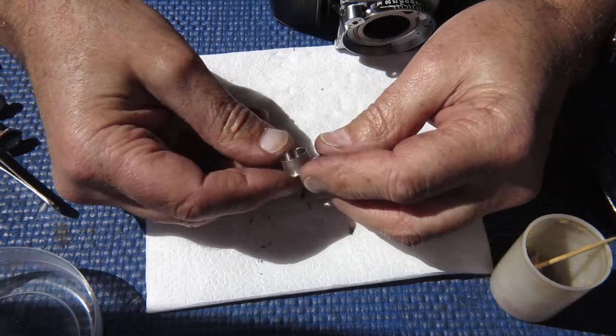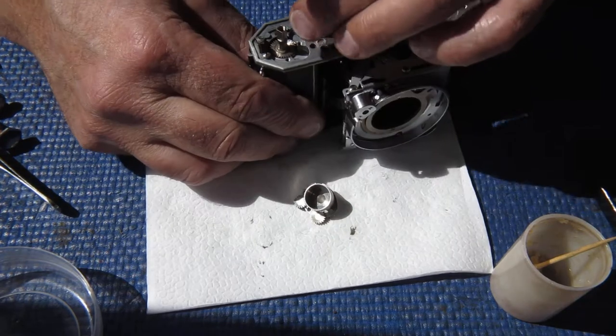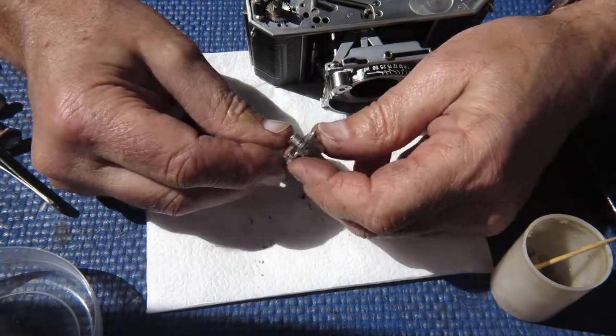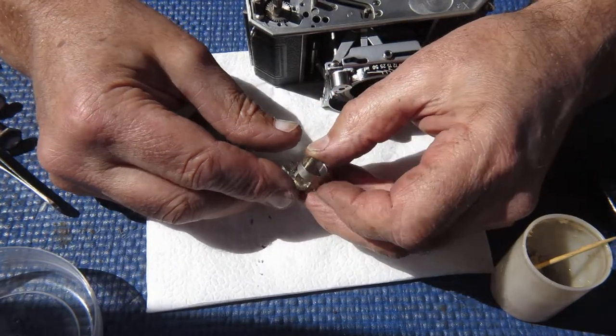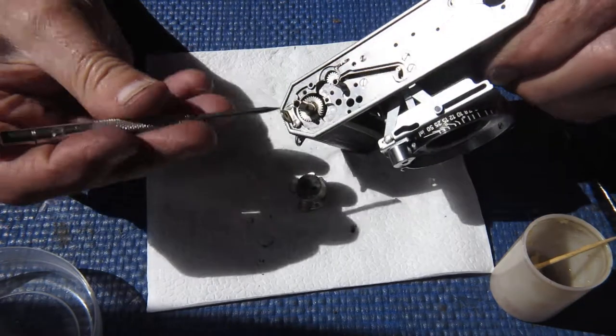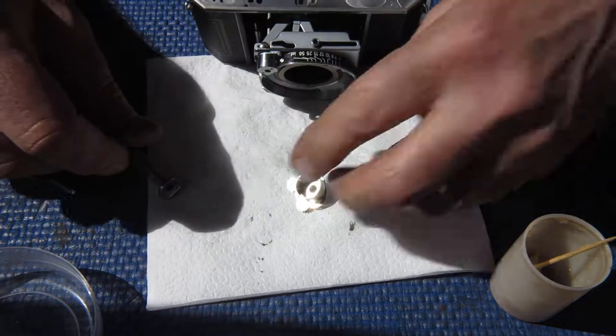Now we have this guide bush that fixes the position of the shaft itself at the top, stops that floating around. But it also carries these idler gears here, and the idler gears couple this gear to this gear amongst other tasks.